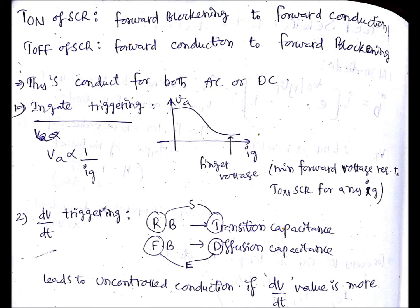Then the second method of triggering is dv/dt. Here in this triggering method, there are two important capacitance terms: transition capacitance and diffusion capacitance. Transition capacitance occurs during reverse bias.